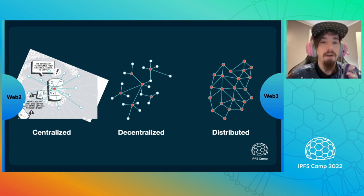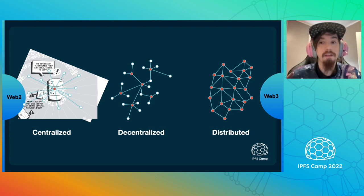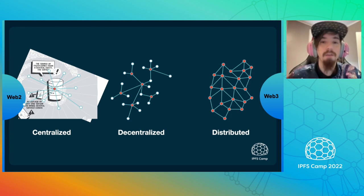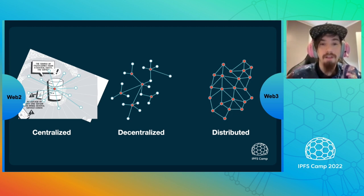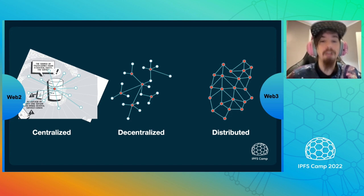Currently, the Web 2.0 model is centralization. Amazon, Google, Fastly — if any of these fail, and they do occasionally, entire services can go down. As you get decentralized and further distributed, your service's resilience increases as the users themselves are what are powering the service. In the distributed web, each user is also providing a piece of the network itself. If a user goes offline, the network functions as normal. If a major node goes down, the network can still function by leveraging the local peers. It is the champion of resilience, and the model I believe will take us forward.